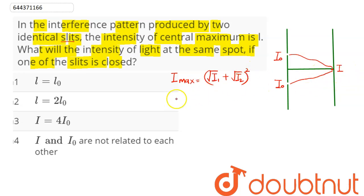...we can see that this maximum intensity I at the central maxima given in the question comes as (√i₀ + √i₀)², which is (2√i₀)².